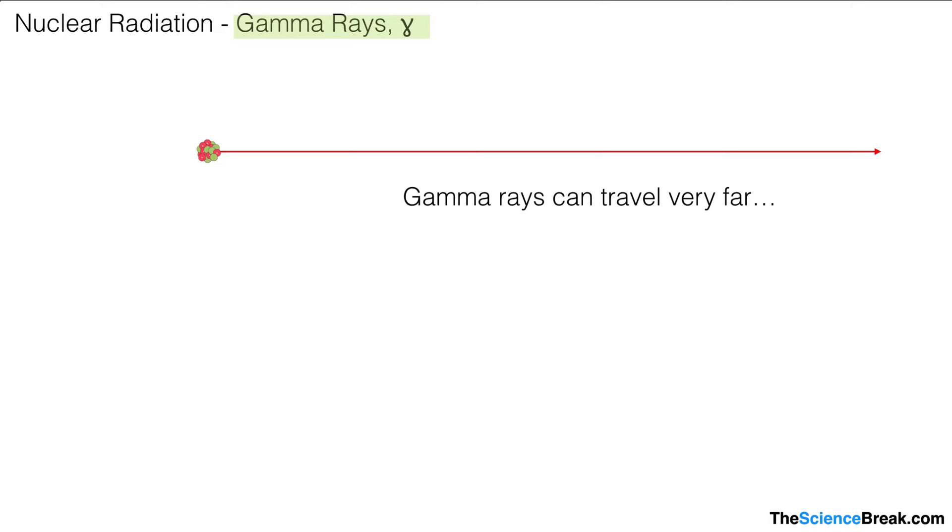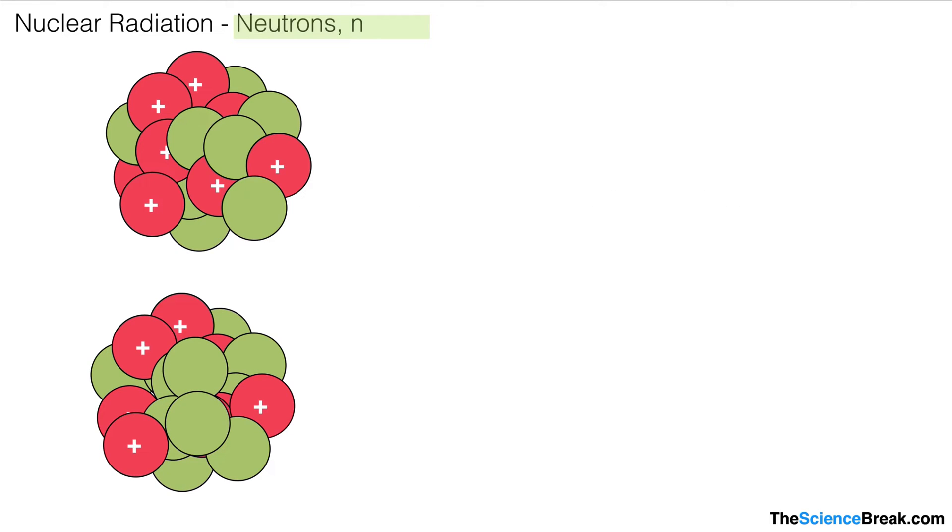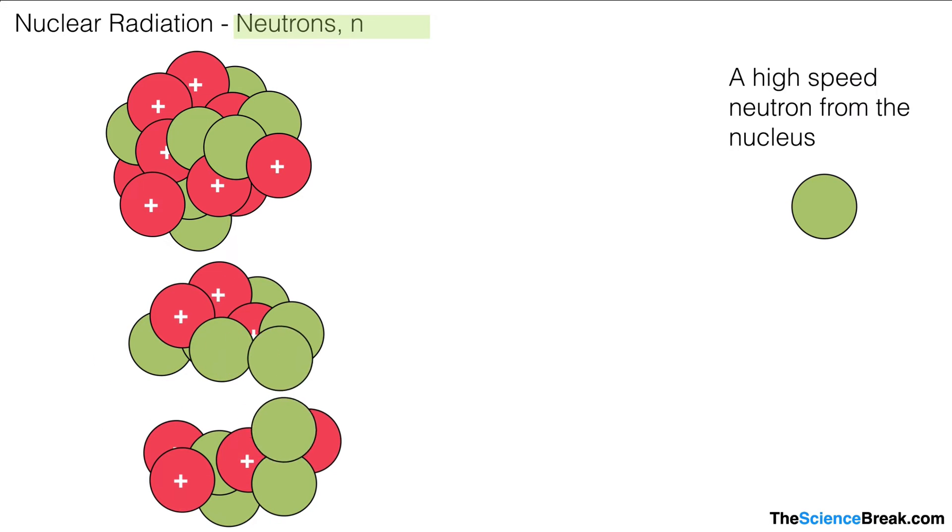Our next type of nuclear radiation is the neutron. We can look at two scenarios of how this is given off. In the first one, in the top diagram, the neutron is simply given off from the nucleus of the atom, and there it is—a high-speed neutron is ejected from the nucleus. In our second diagram, it's when we have a nucleus which splits and two, maybe three, neutrons are given off. This comes from a process called nuclear fission, and we'll look at that in more detail in a future video.